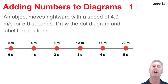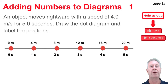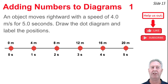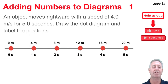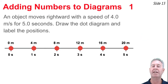On occasion you'll be asked to draw a dot diagram with numbers for position and time. For example: an object moves rightward at 4 meters per second for 5 seconds — draw the dot diagram and label the positions. I've drawn the dots with equal spacing since the speed is a constant 4 meters per second, placing dots 4 meters apart, labeled starting at 0 meters. The positions are 0, 4, 8, 12, 16, and 20 meters at times 0, 1, 2, 3, 4, and 5 seconds. That's an example of adding numbers to dot diagrams.